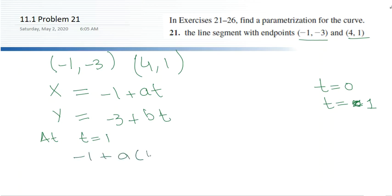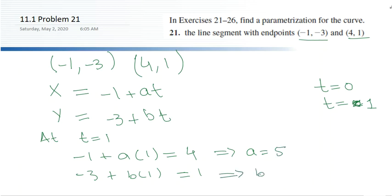At t equals one, x should be: -1 plus a times 1 equals 4 (the x coordinate of the final point). Similarly, -3 plus b times 1 equals 1. Upon solving, a equals 5 and b equals 4. So the parameterization is x equals -1 plus 5t and y equals -3 plus 4t. Of course there may be other parameterizations as well.